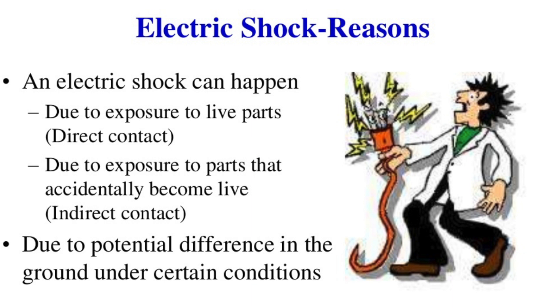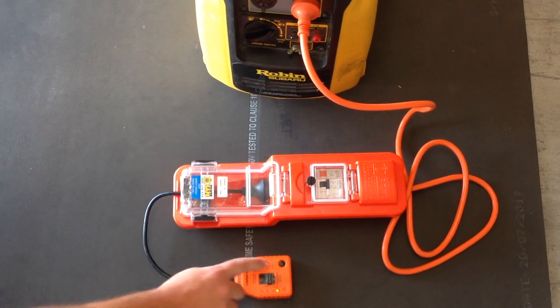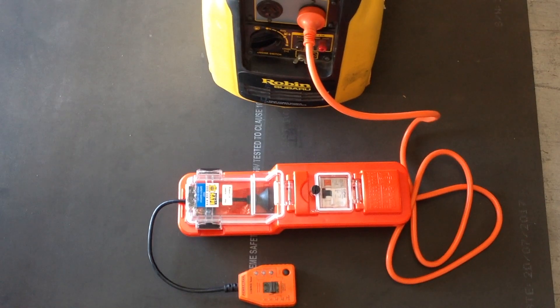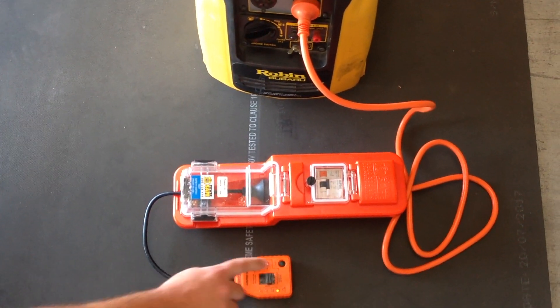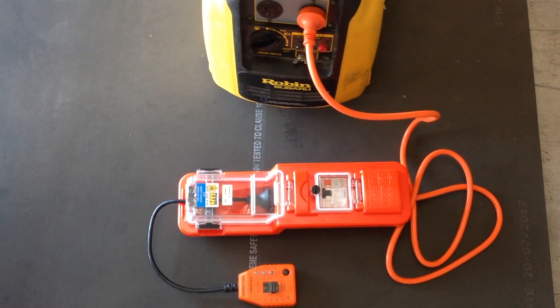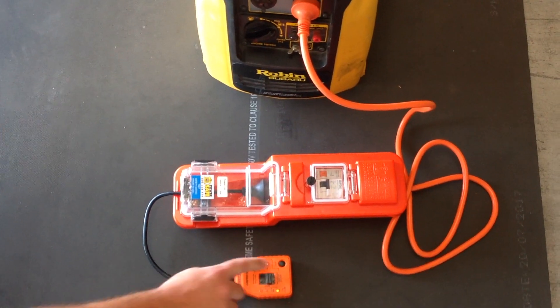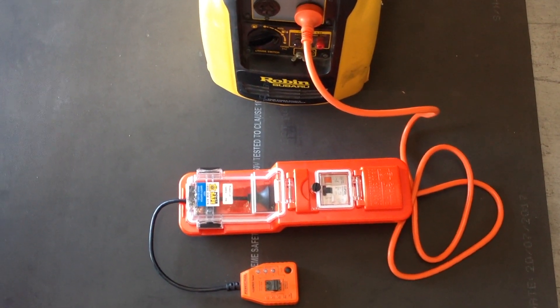When the fault is simulated by the RCD tester in the circuit, then the ESD side of the DUO will trip, thus shutting down the power off to the user, alerting them that there is an issue and shutting the circuit down on the device that they are operating, protecting the user.